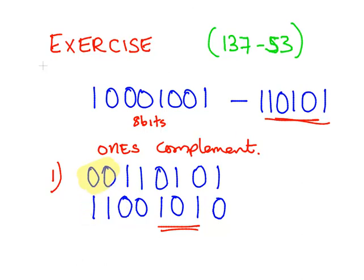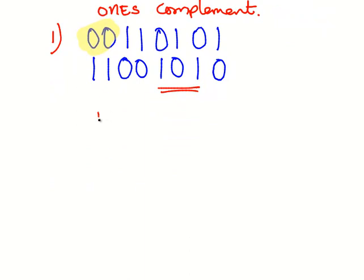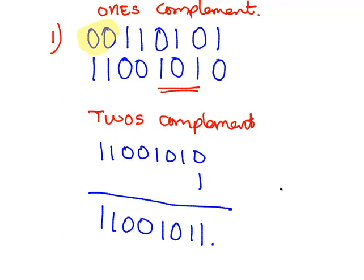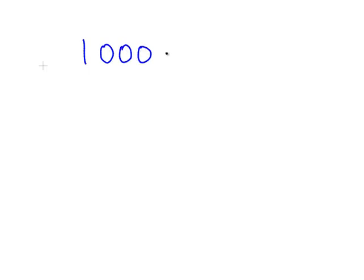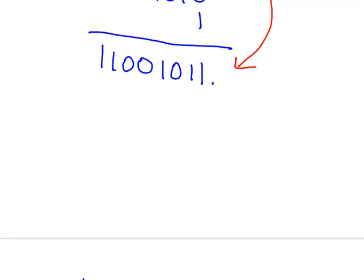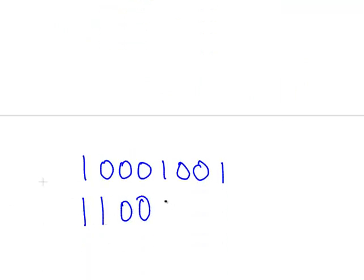After that it gets relatively straightforward. We get the 2's complement by adding 1 to the 1's complement: 1, 1, 0, 0, 1, 0, 1, 0 plus 1 gives us 1, 1, 0, 0, 1, 0, 1, 1. That's the 2's complement. Now just add the original number 137 — which is 1, 0, 0, 0, 1, 0, 0, 1 — to the 2's complement, 1, 1, 0, 0, 1, 0, 1, 1.